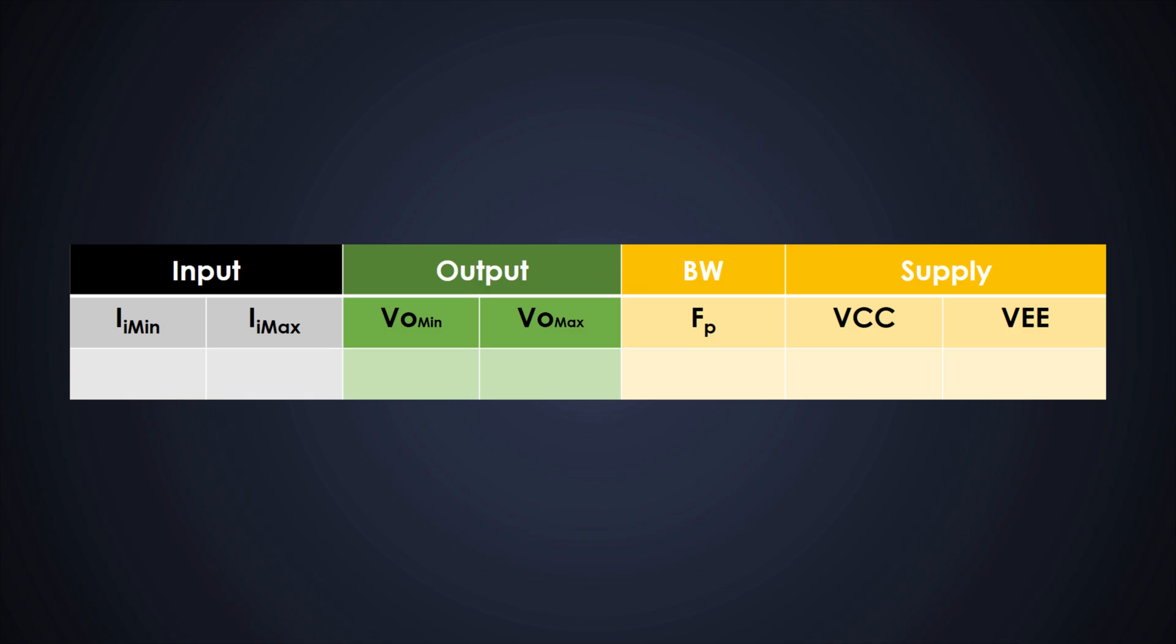Let's consider a practical example. Assume we have a current source like a photodiode, which generates current from 0 to 50 microamperes. And we need to convert this current into voltage from 0 volts to 5 volts. The frequency of this signal is 10 kilohertz.